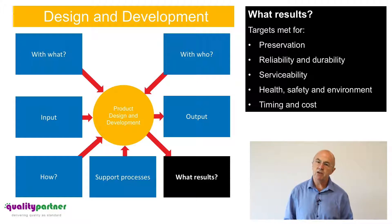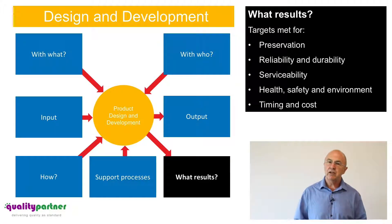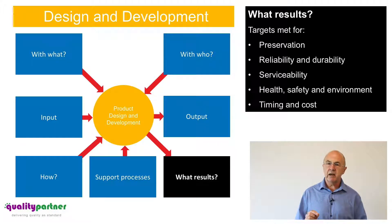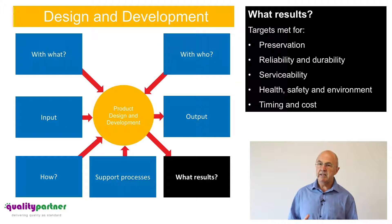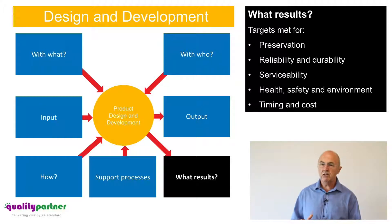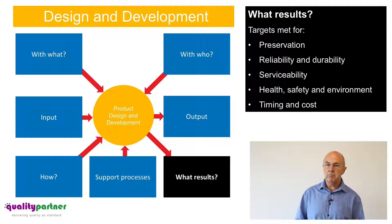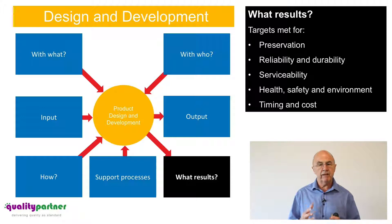We need to make sure the process is capable of achieving the desired results, so an organisation has to define measures of process effectiveness and efficiency. Within IATF 16949 it talks about having design targets — targets for preservation, reliability and durability, serviceability, health and safety and the environment, and timing and cost targets — clearly defined and met for each new product introduction. It's a good opportunity to review whether your current targets cover all these factors.